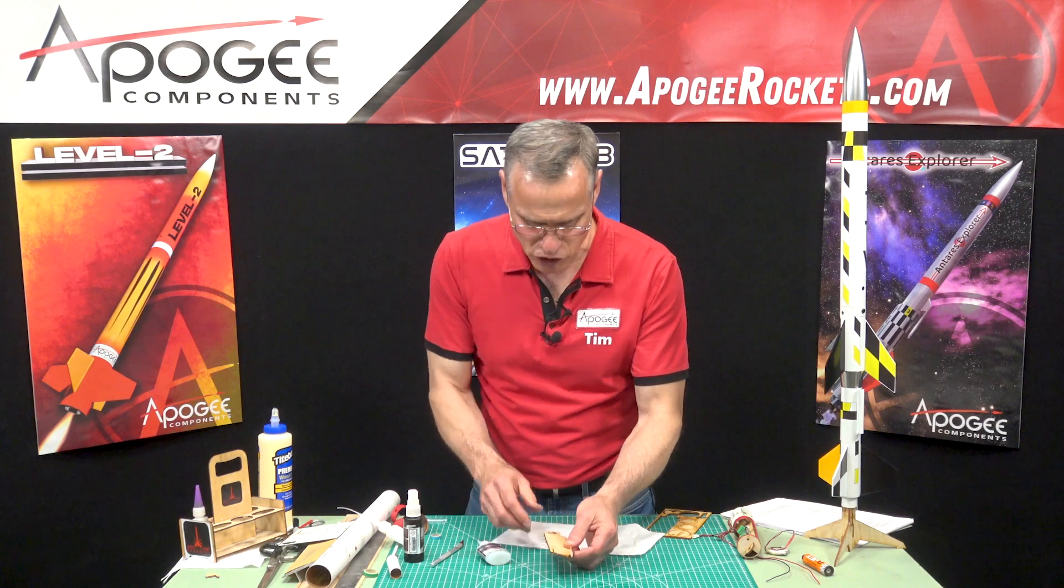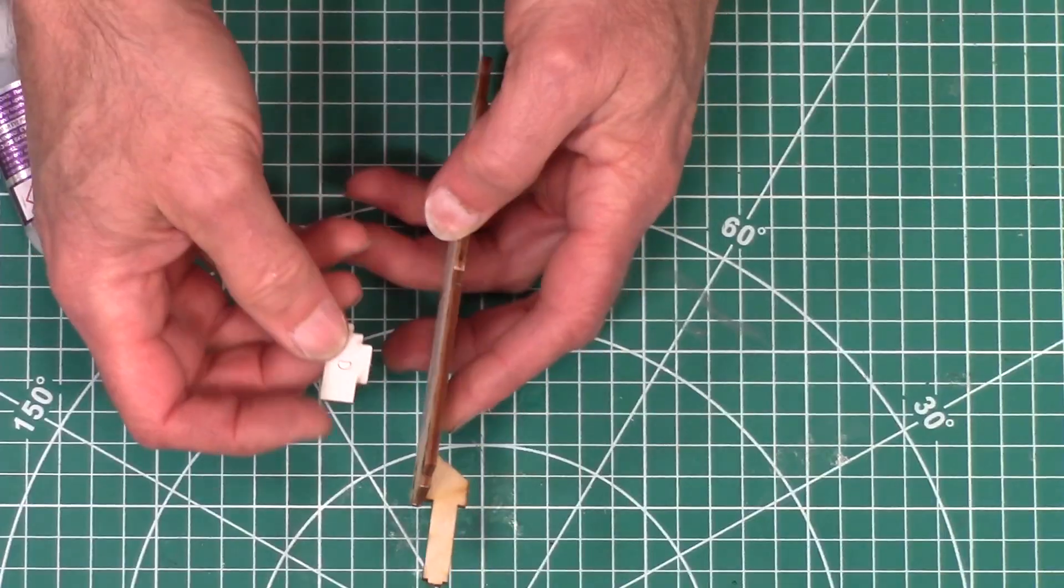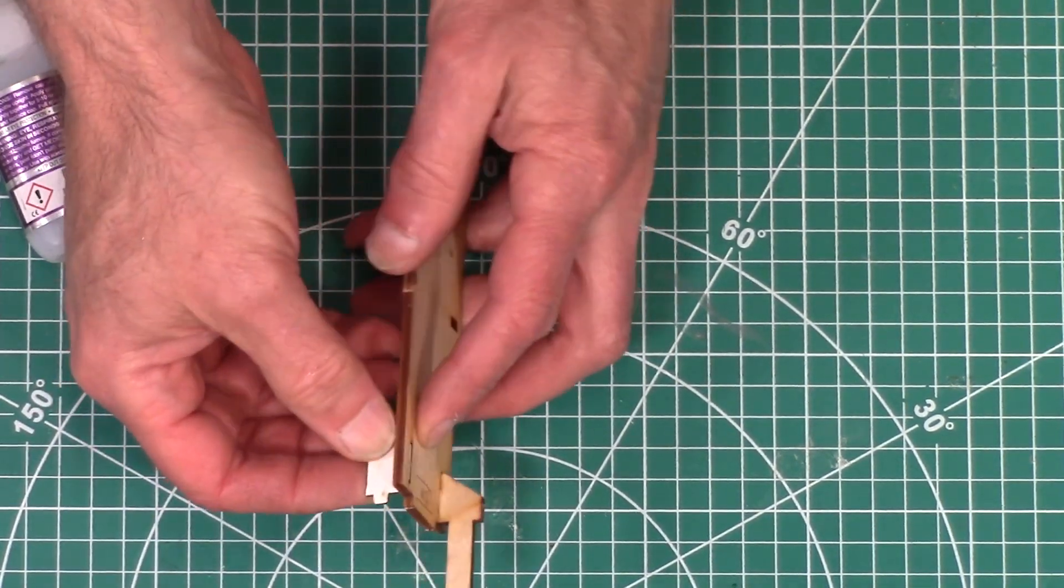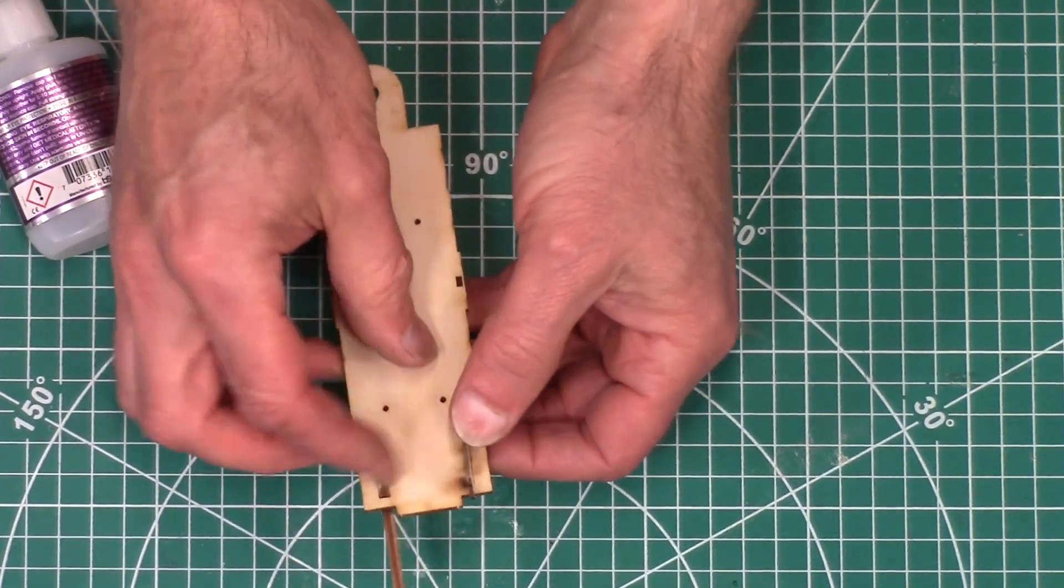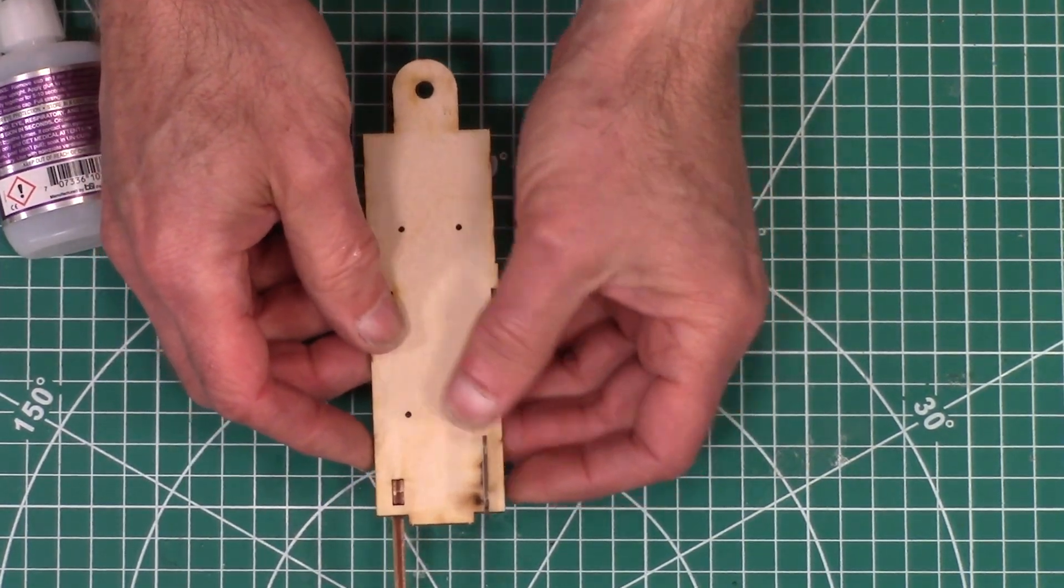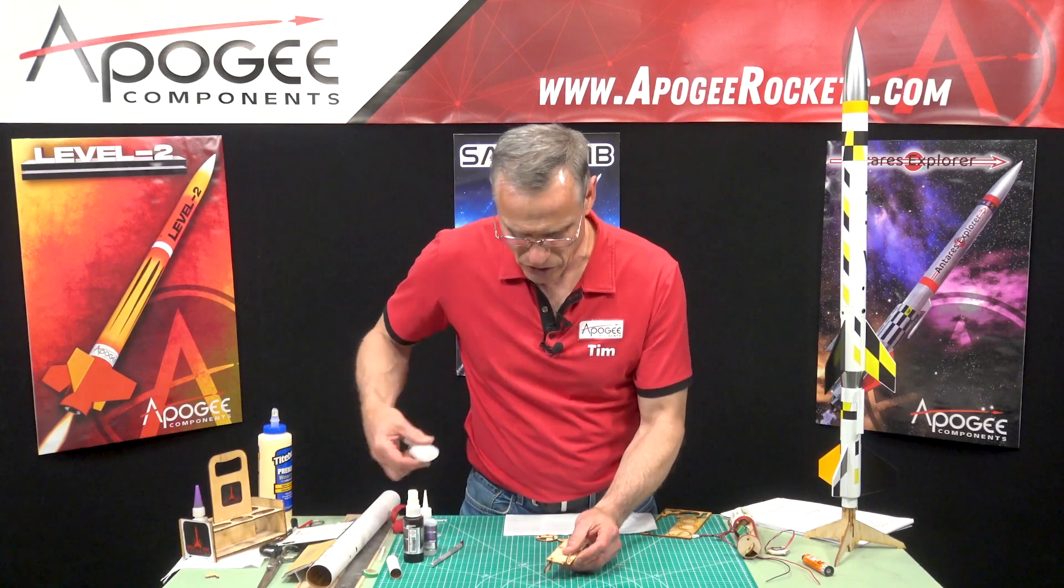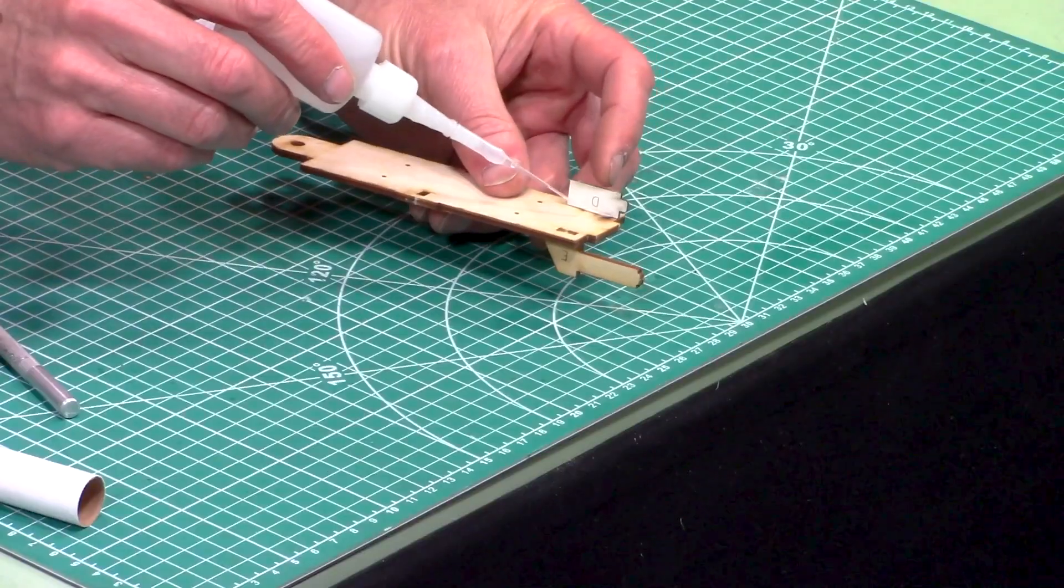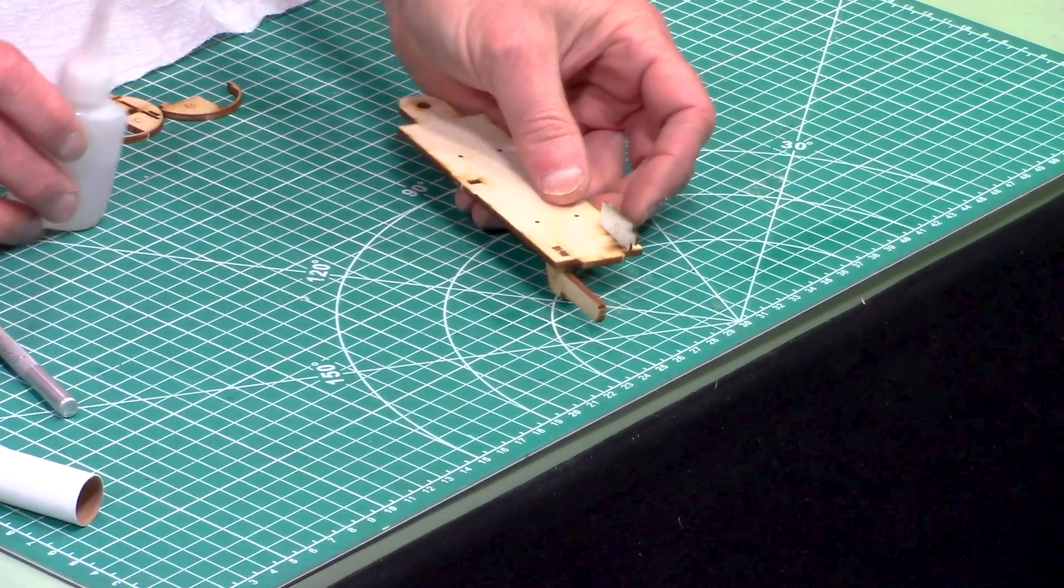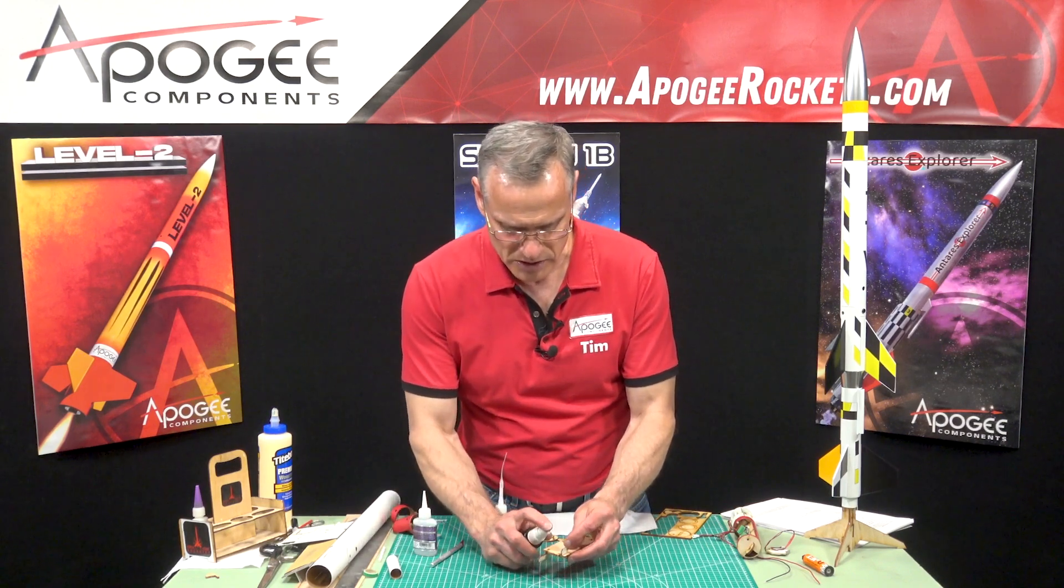Oops, and step two, we got kind of out of order there. We want to take this piece right here, and it gets glued here on the back side of the board right there. For that, I'm going to use thin, and I'm just going to wick some CA glue right into that corner, and again I'll hit it with the Insta-Set.